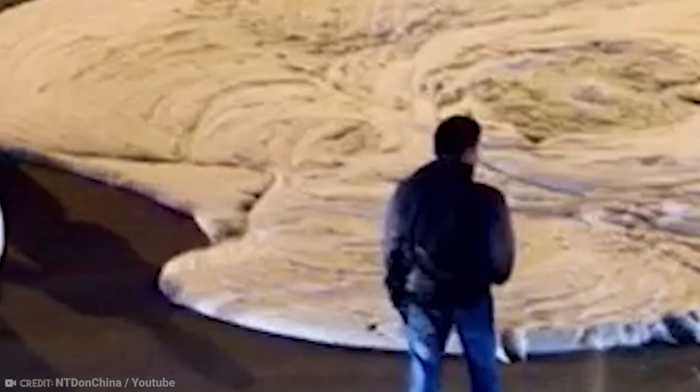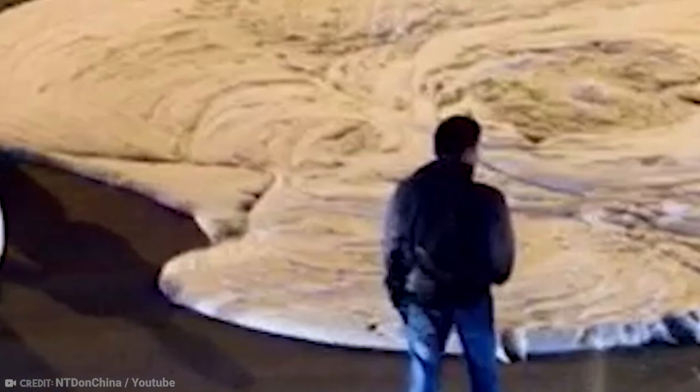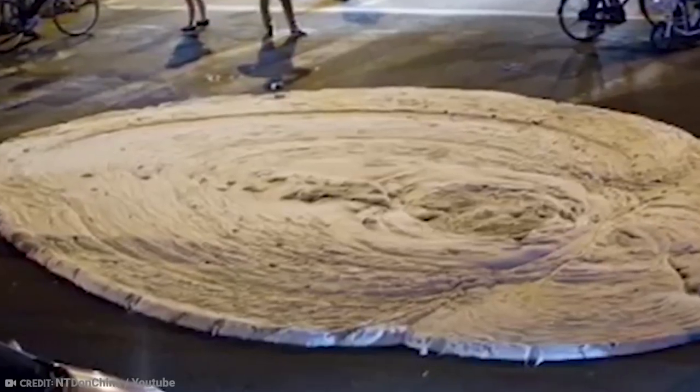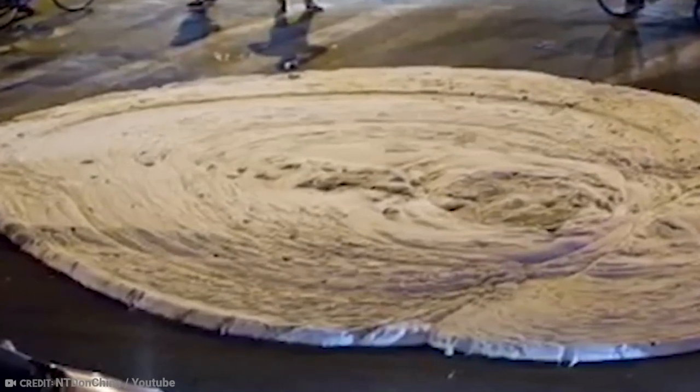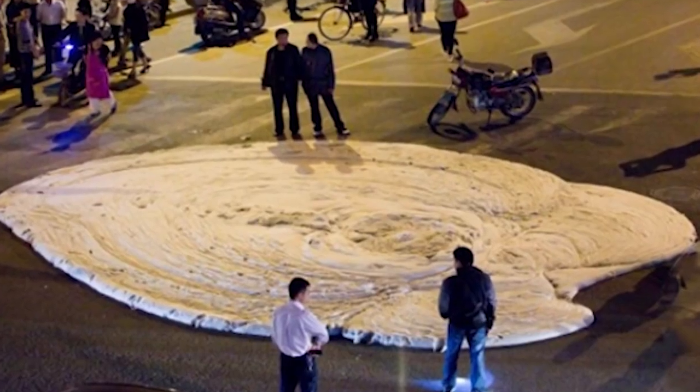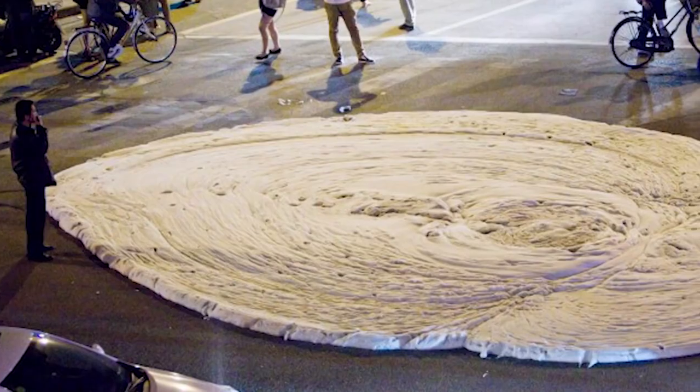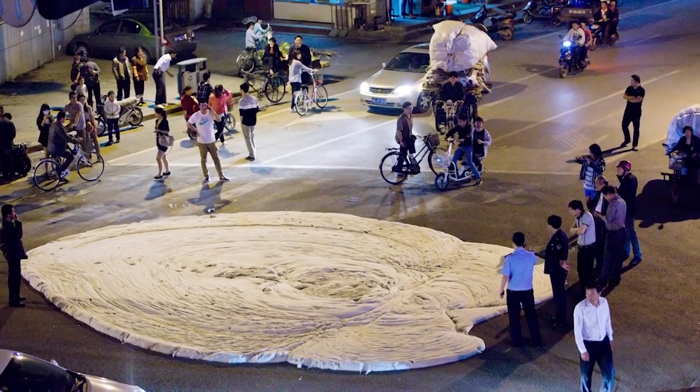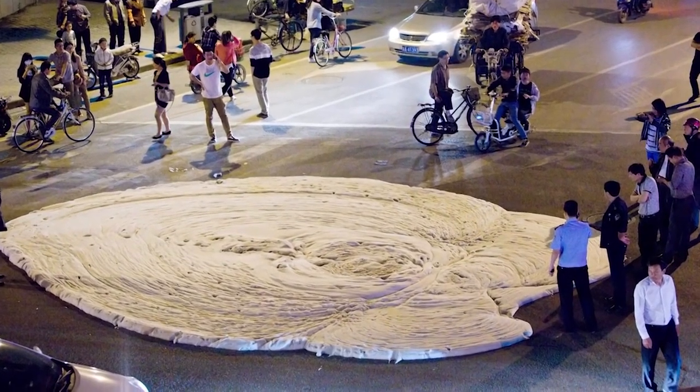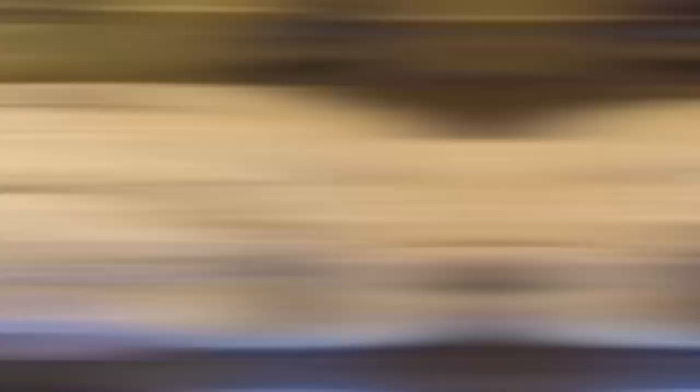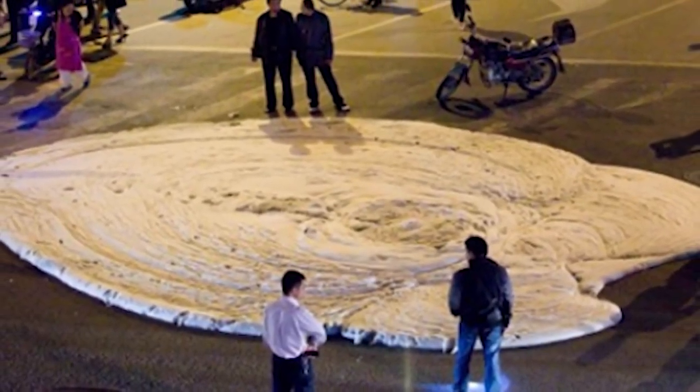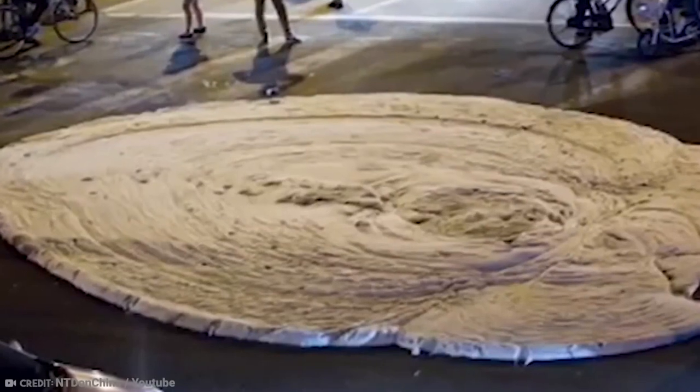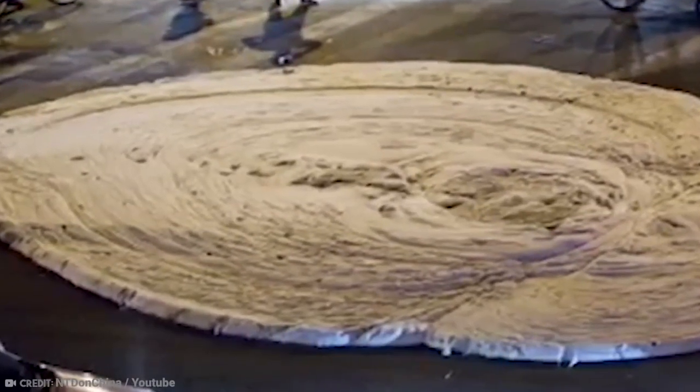It soon transpired that this was actually a type of chemical that was being used to soften soil during the construction of a nearby subway. But something had gone wrong with its application and it had been accidentally released. The mysterious ooze soon dissipated back through the cracks from where it had come from, but not before making people question whether adequate safety measures were in place for the use of such substances.